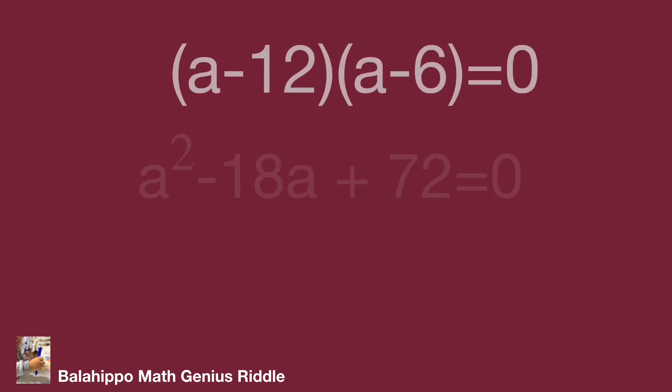Factorize that. Get (a - 12)(a - 6) = 0. Then a - 12 = 0 and a - 6 = 0.